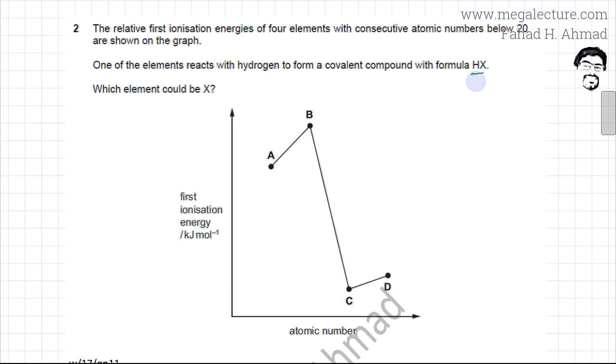Generally group 7 elements form compounds like this - it could be HF or HCl. With hydrogen, group 7 generally forms molecules of this type. So I'm suspecting that X is a group 7 element. Which element could be X? It's probably a group 7 element.